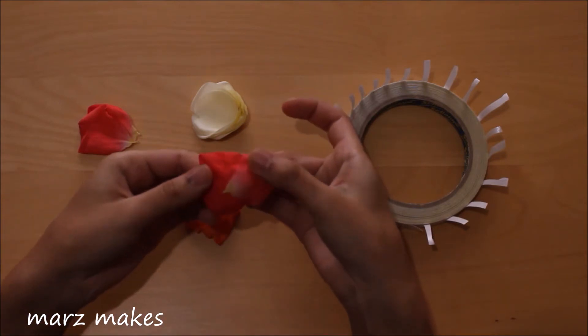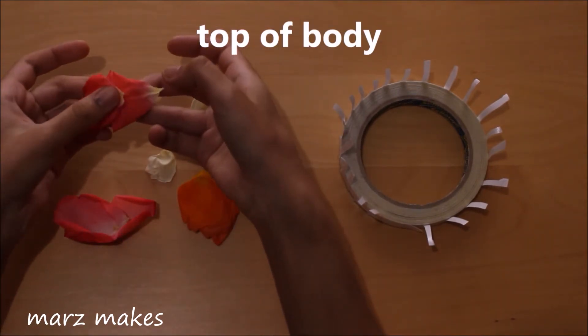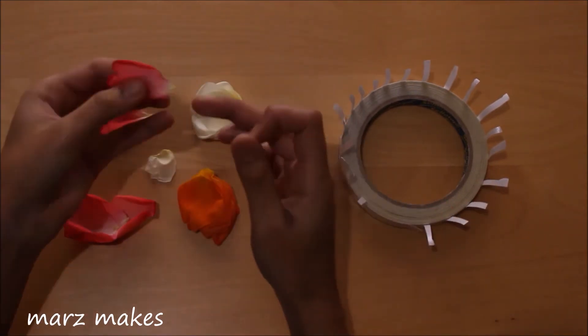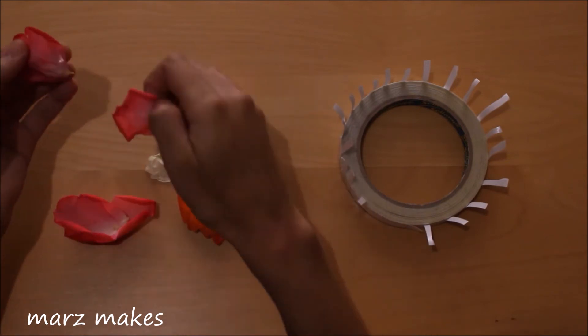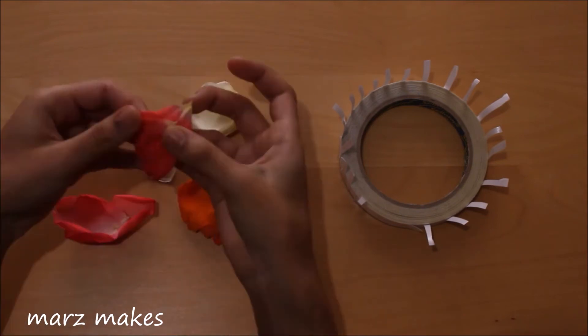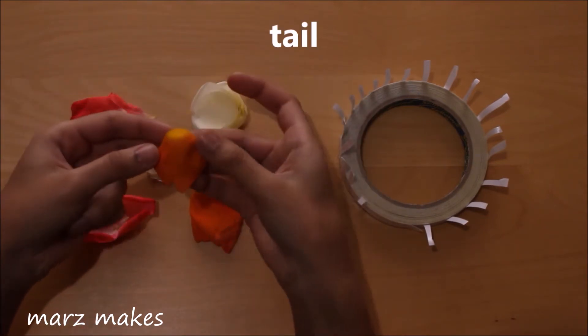For the top of the body I'm layering two petals in the same direction. Next I'm making the tail and following the same method of layering five to six petals and sticking them together.